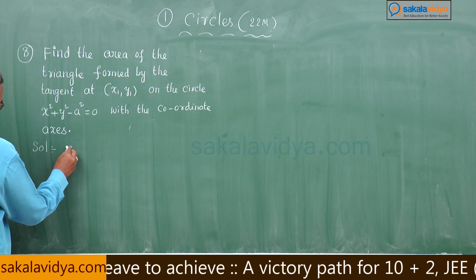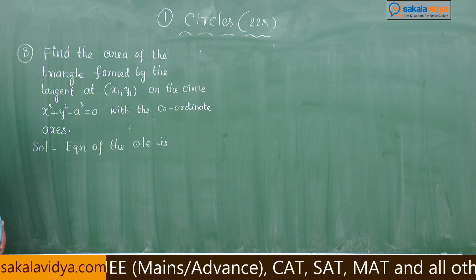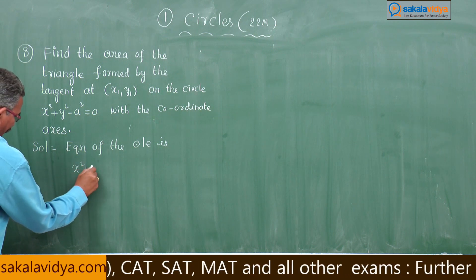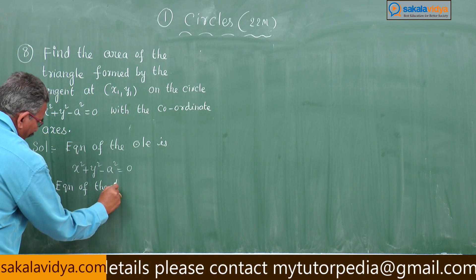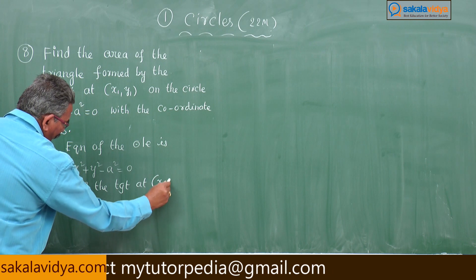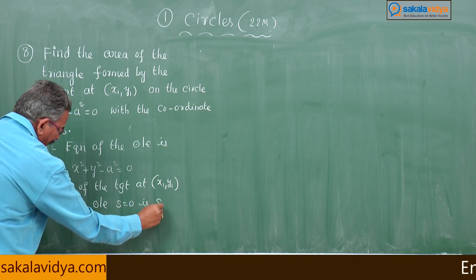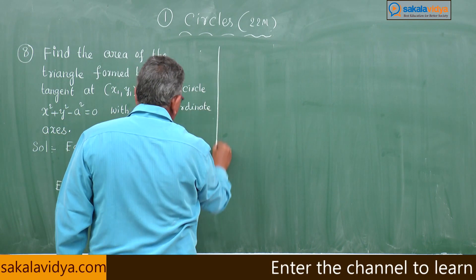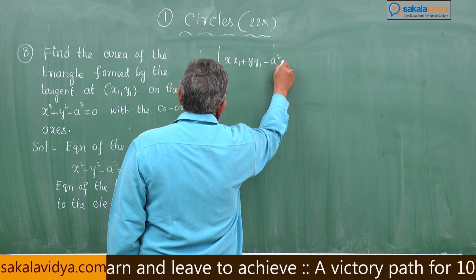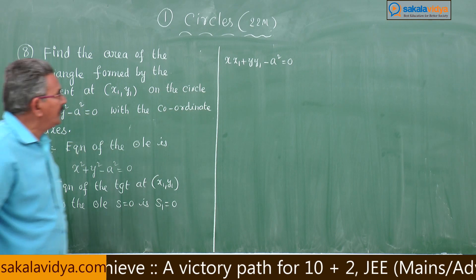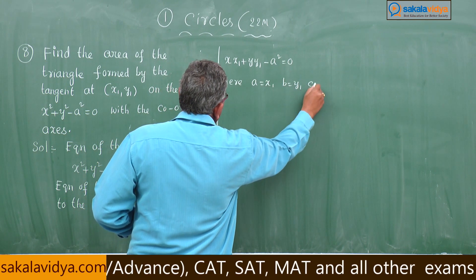Now, the equation of the circle is x² plus y² minus a² equals 0. The equation of the tangent at x₁ comma y₁ to the circle S equals 0 is S₁ equals 0. That means x·x₁ plus y·y₁ minus a² equals 0. This is the equation of the tangent. Here, a stands for x₁, b stands for y₁, and c stands for minus a².